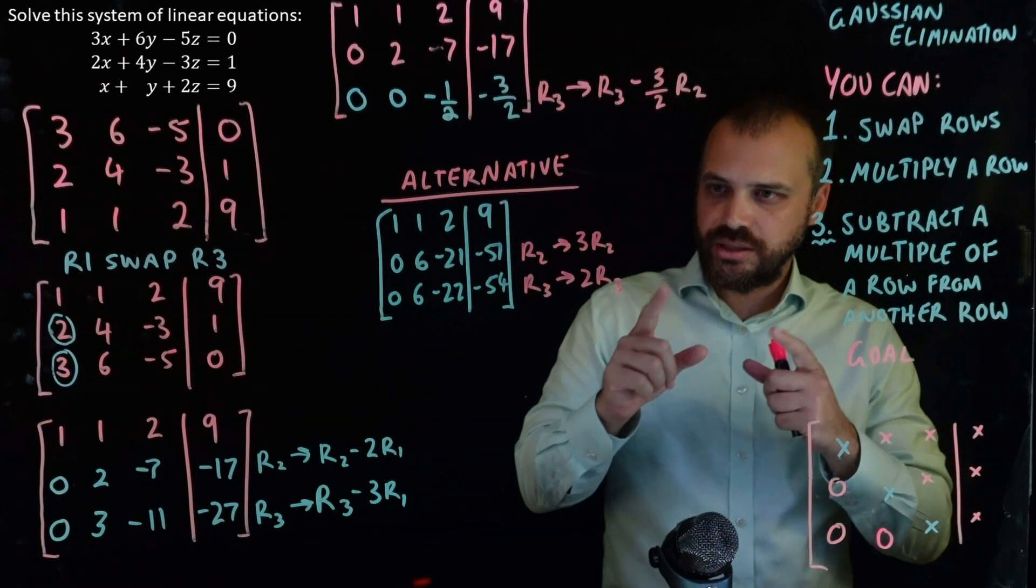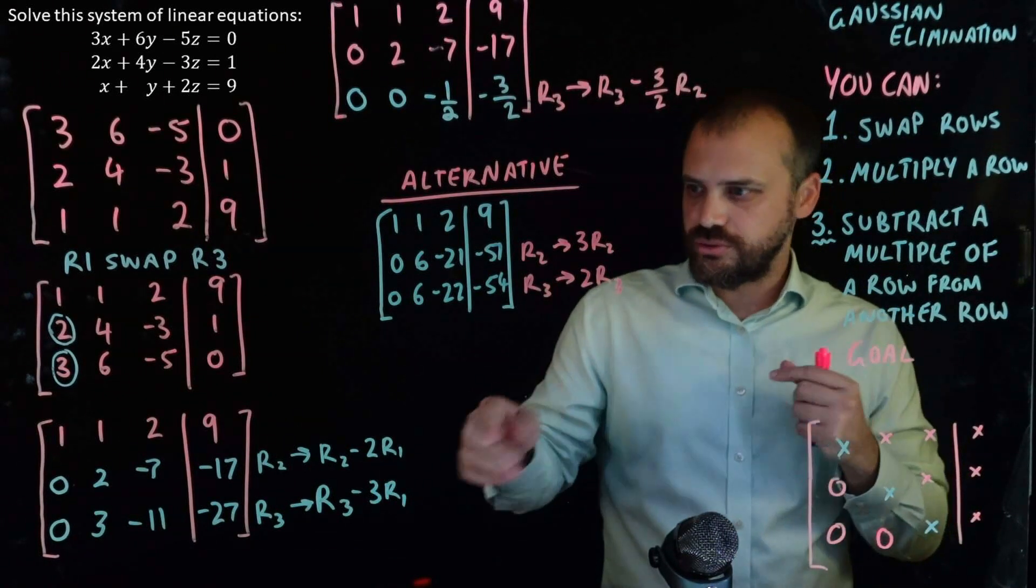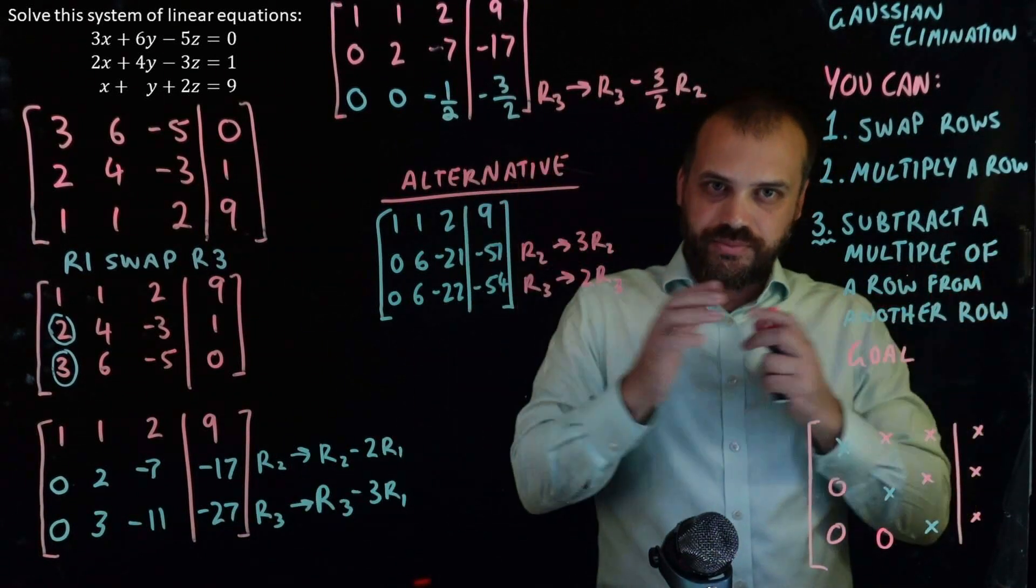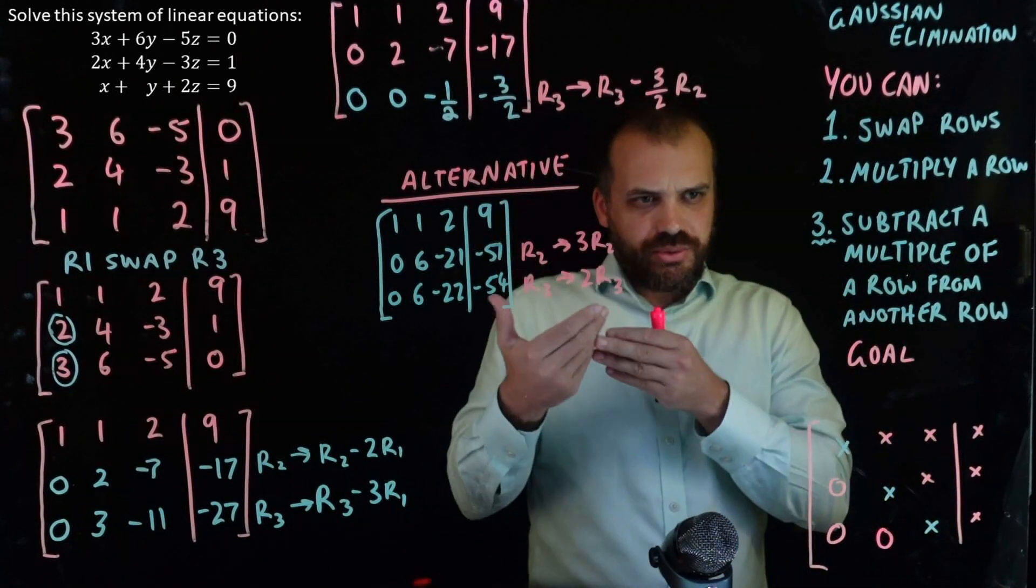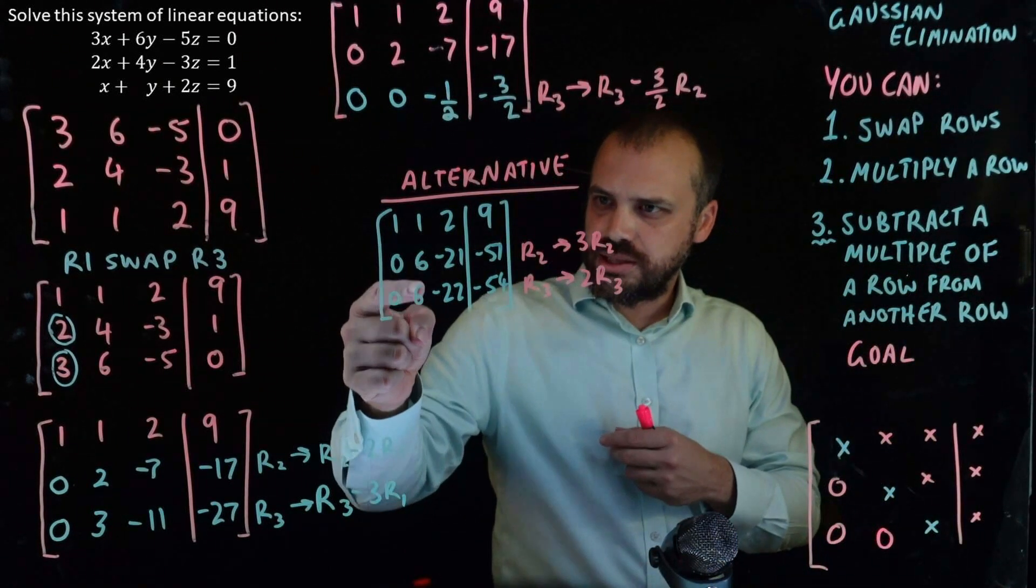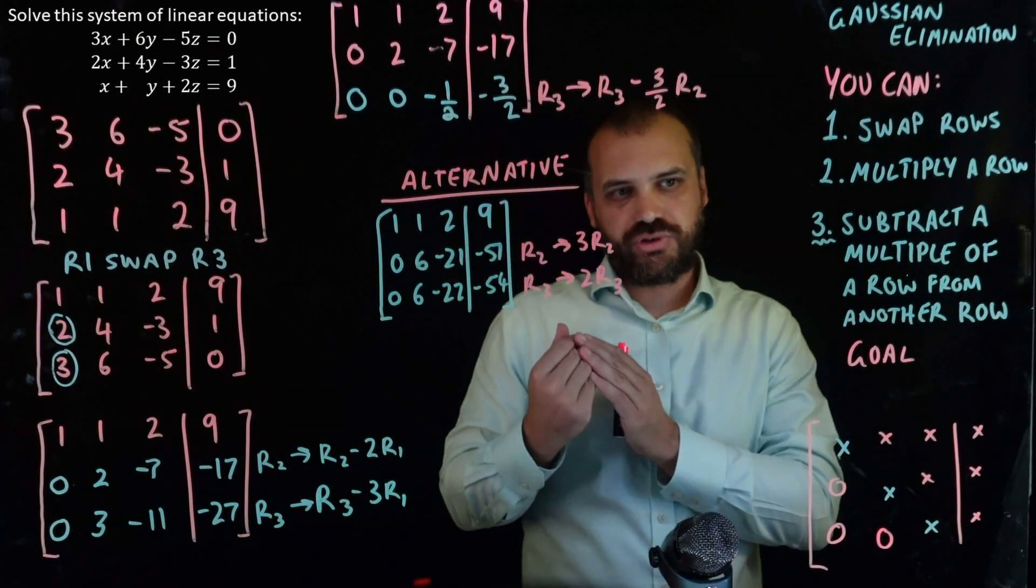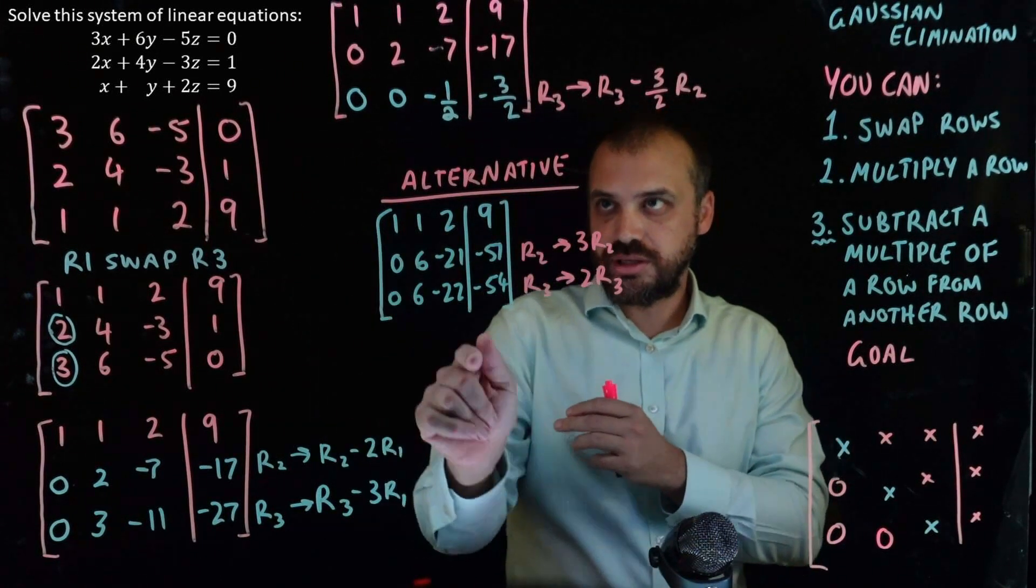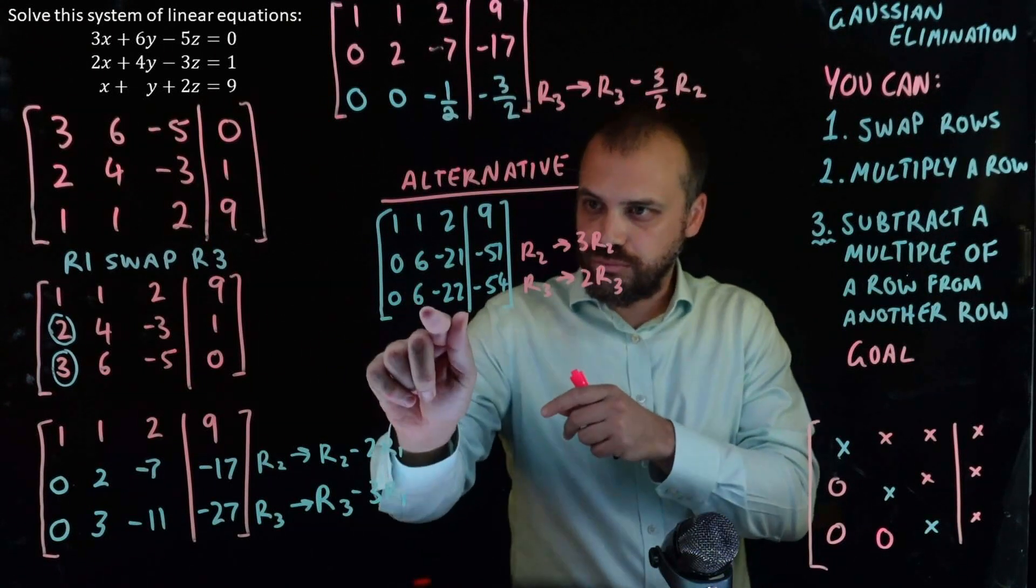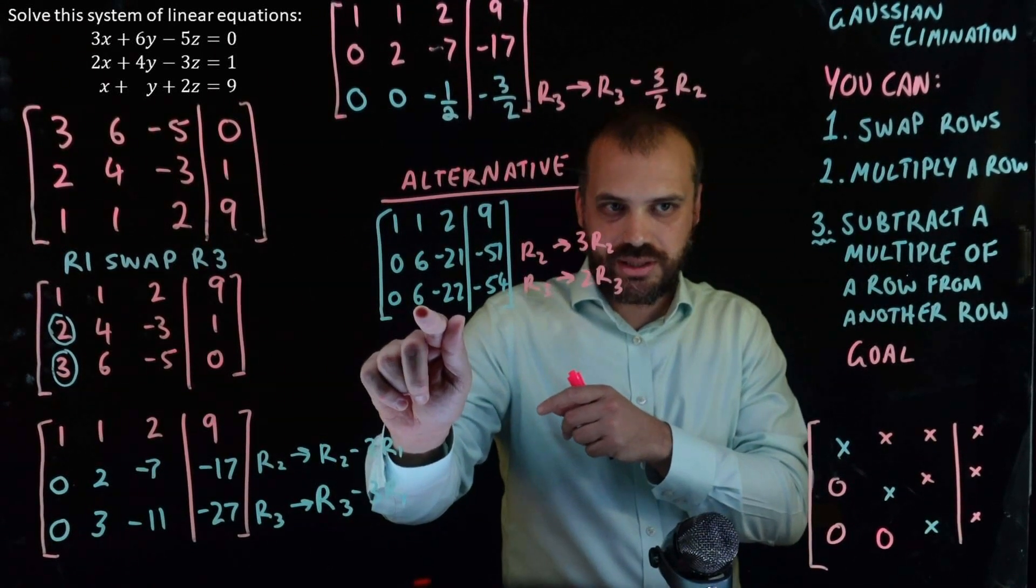Negative 17 times 3 is negative 51. And row 3 is 2 times row 3. And then this, this and this. Why multiply by 2 and 3? Because it makes these equal to each other.